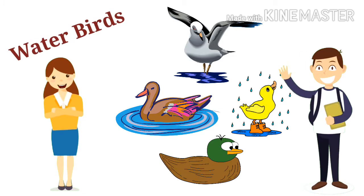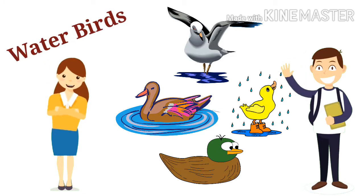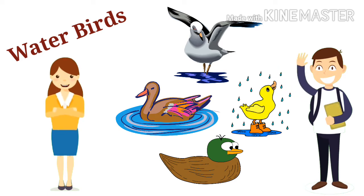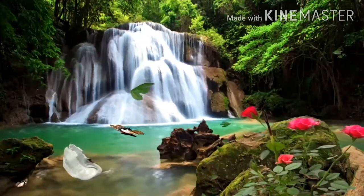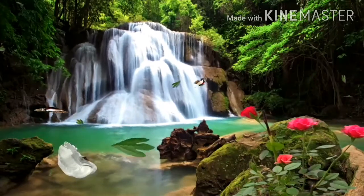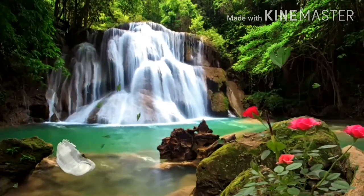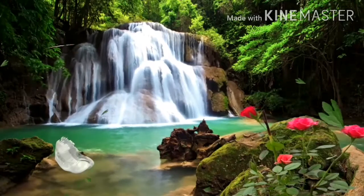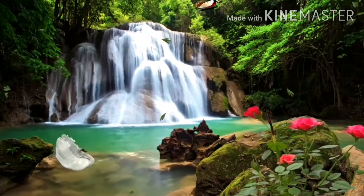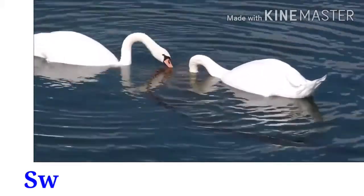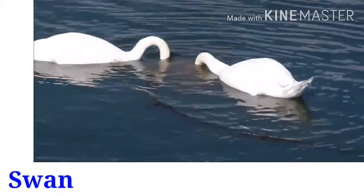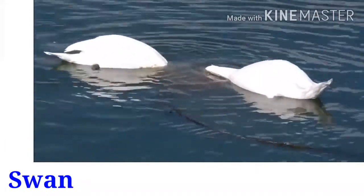Hello friends, let's learn about water birds. Water birds are birds that live on or around water — in freshwater habitats or marine environments. In this context, water birds refer to any birds that depend on bodies of water or wetland areas.